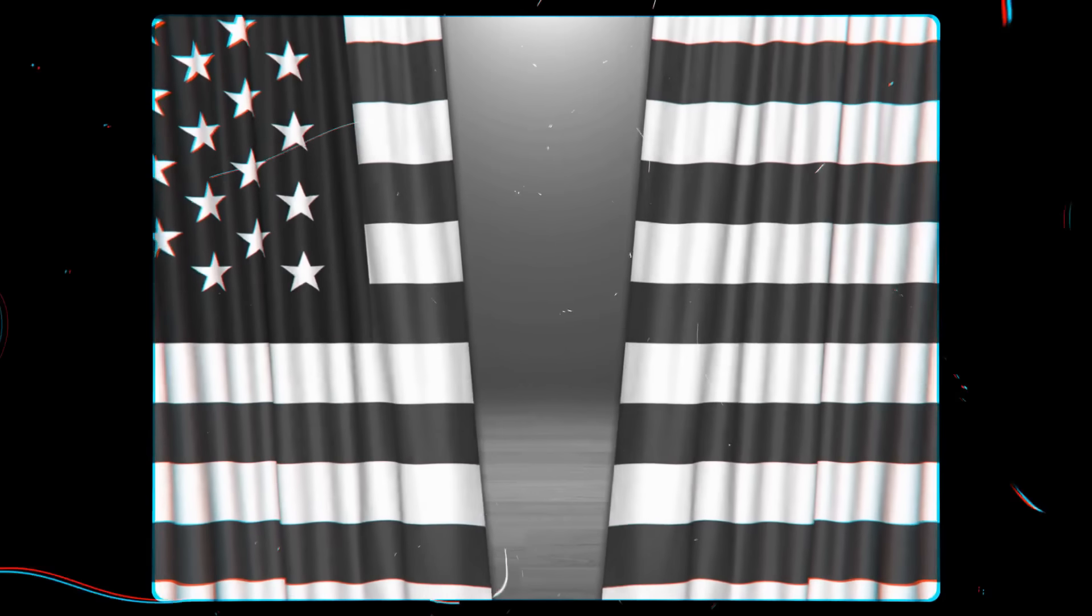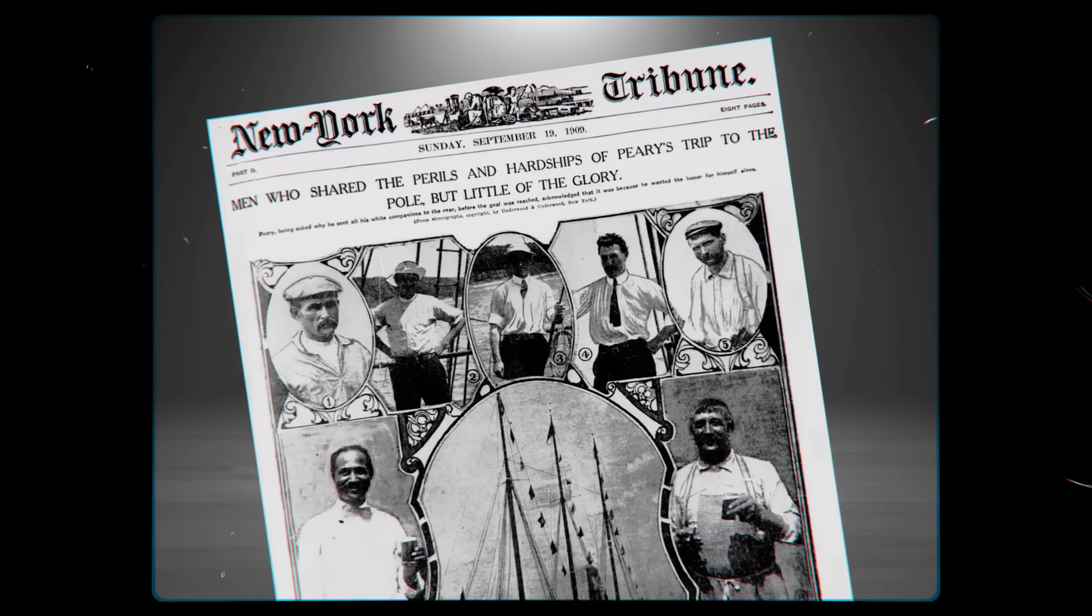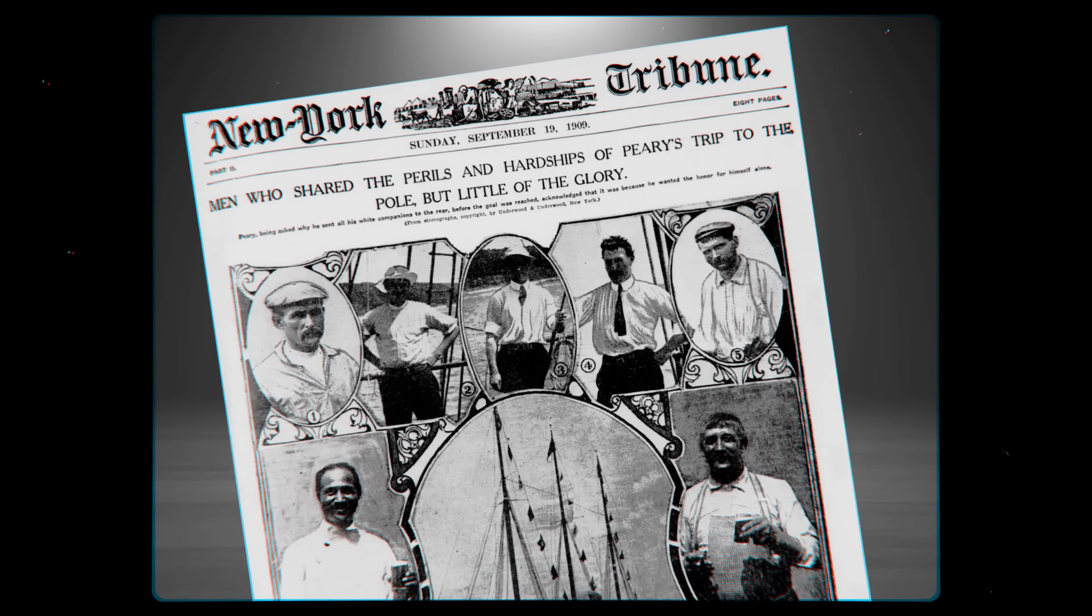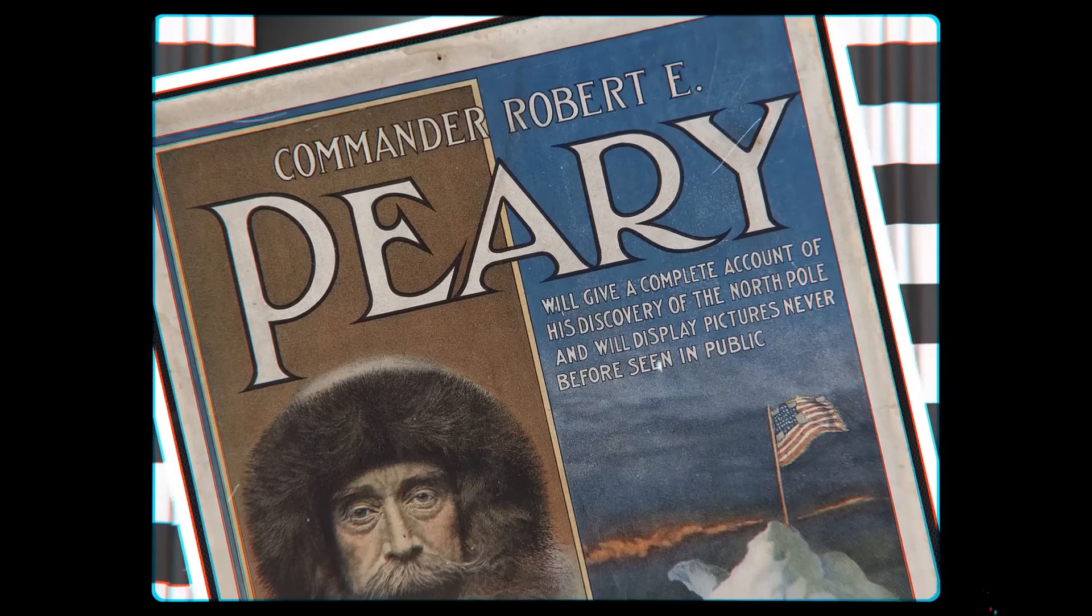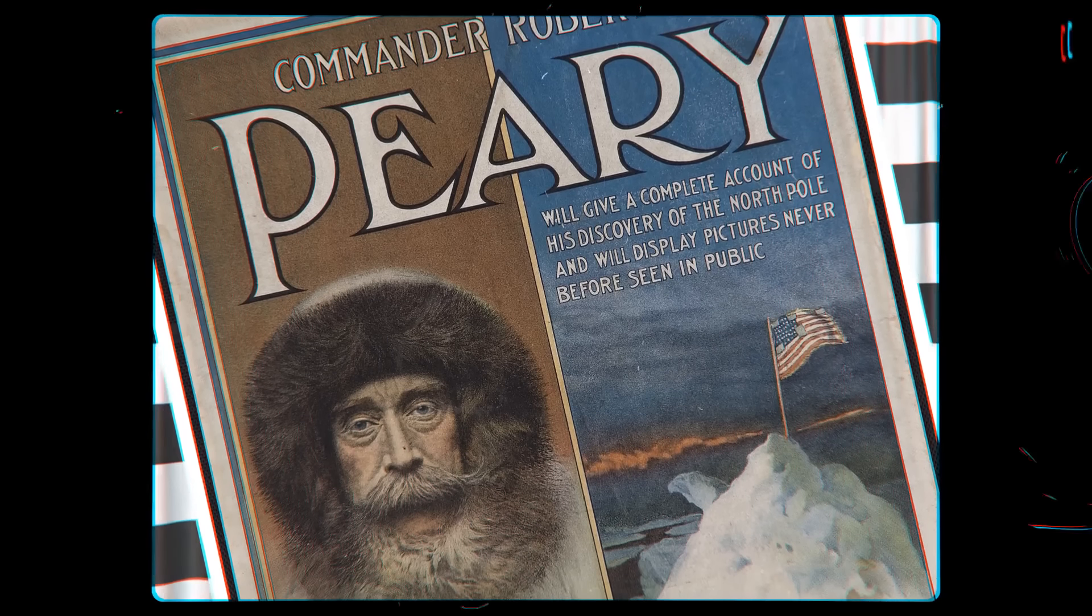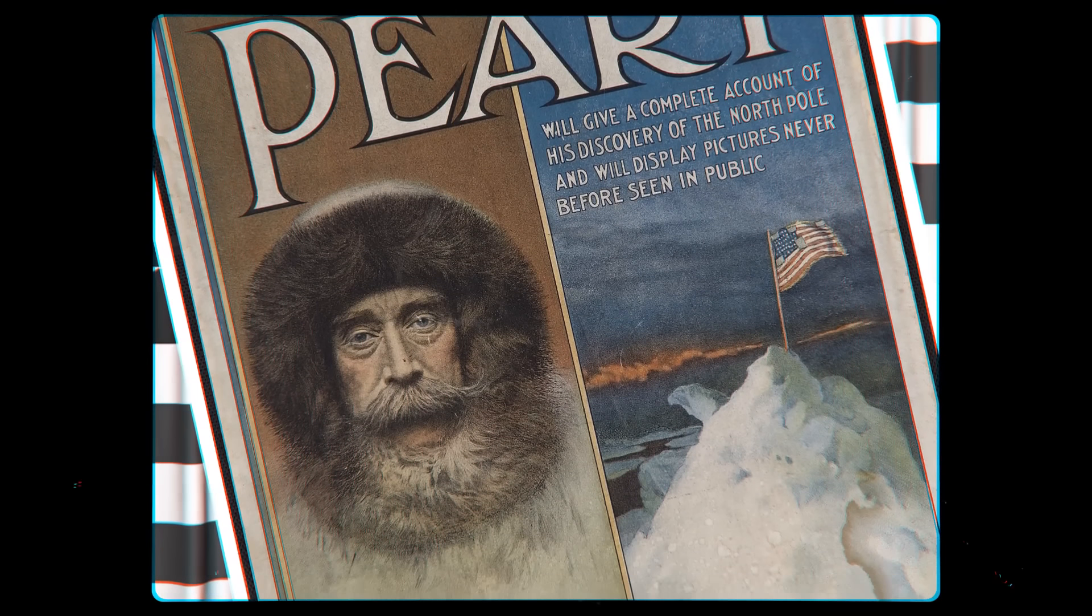On the 7th of September, 1909, the New York Times came out with a sensational front page. Peary discovers the North Pole after eight trials in 23 years. Robert E. Peary, an American explorer, claimed to have reached the North Pole in April of the same year. But communication back then was slower than now, so the message had only reached New York by September.